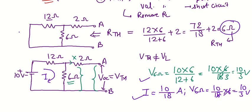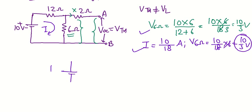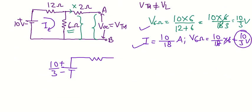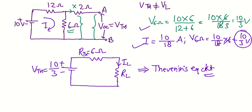We now have RTH = 6 ohm and VTH = 10/3 volt. The Thevenin equivalent circuit consists of VTH = 10/3 volt in series with RTH = 6 ohm, and RL is connected in series to complete the circuit. To find the load current IL, it equals VTH divided by the total resistance: IL = VTH / (RTH + RL) = (10/3) / (6 + RL).